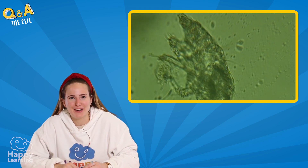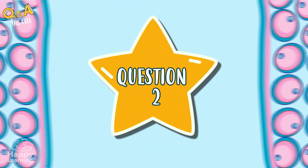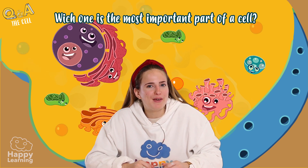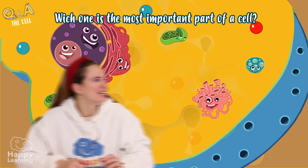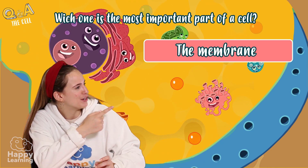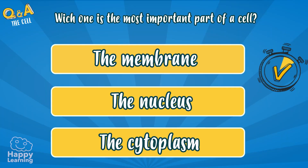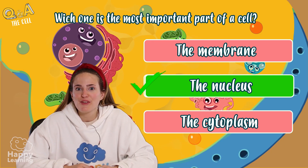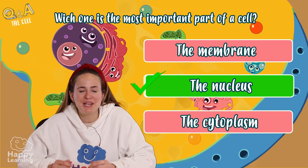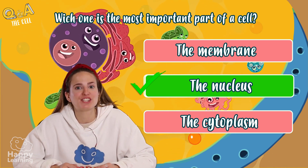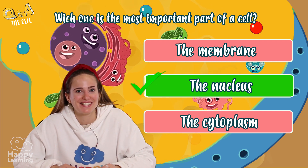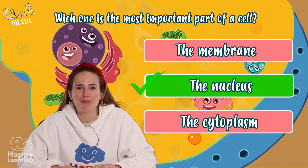Now let's head to the next question, although this one is a little bit tougher. Which one is the most important part of the cell? The membrane, the nucleus, or the cytoplasm? So the most important part is the nucleus, but there are many other parts that are also very important. Let's get to know a little more about them.